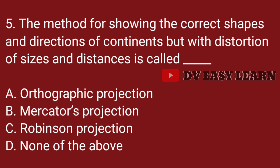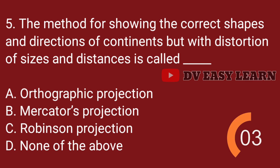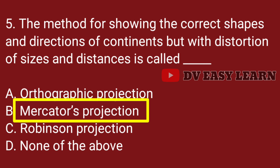Q5. The method for showing the correct shapes and directions of continents, but with distortion of sizes and distances, is called? Correct answer: Mercator's projection.